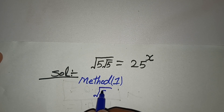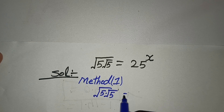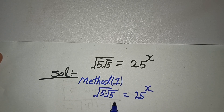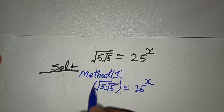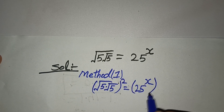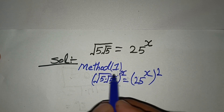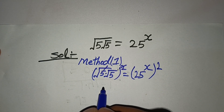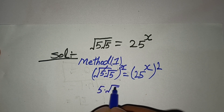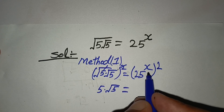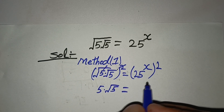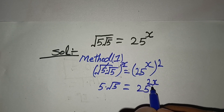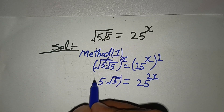Square root of 5 times square root of 5 is equal to 25 power x. Now taking square on both sides — on the right hand side we also take square. This two gets cancelled with this square root, meaning we have 5 times square root of 5 equal to 25 power 2x. Whenever you have power to power, multiply their powers.